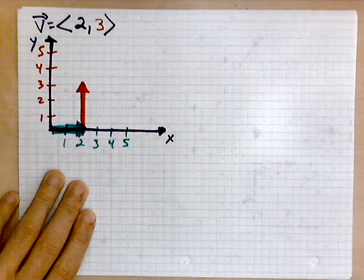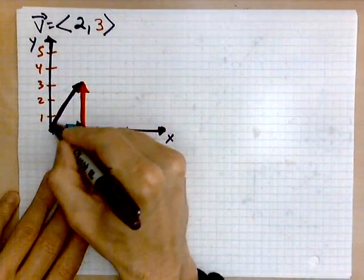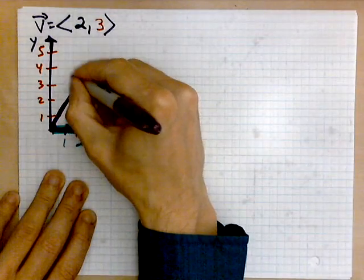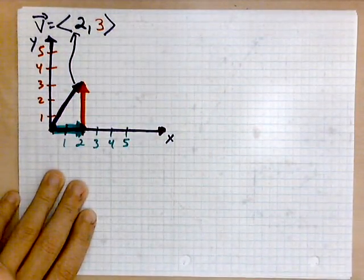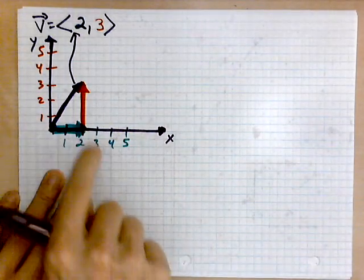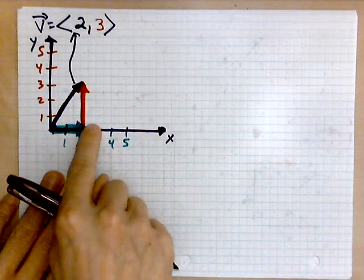Now we connect lastly from the origin to the end of the red arrow, and this is the vector v. Right here, this is our vector. The vector v is the arrow from the origin to the tip of the red one. The x component is 2 and the vertical component is 3.